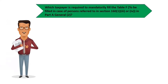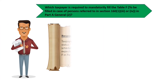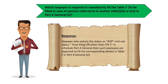Another relevant question for Form ITR-5: which taxpayer is required to mandatorily fill Table F, to be filled in case of persons referred to in section 160 subsection 1 clause 3 or clause 4, in Part A General? Taxpayers who select the status as association of persons and sub-status trust filing ITR other than ITR-7 in Schedule Part A General are required to fill the corresponding details in Table F in Part A General.